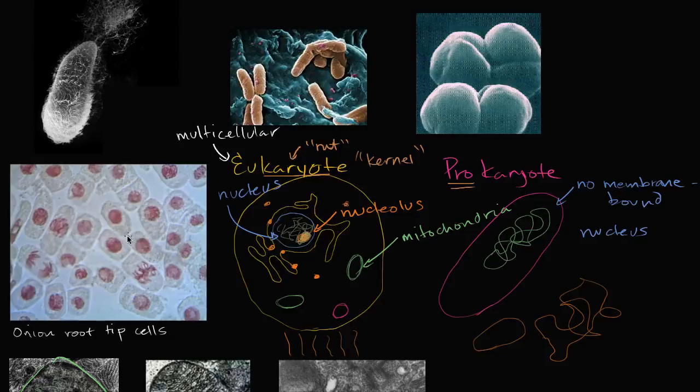This right over here, these are onion root tip cells. So these are plant cells, and you can actually see it's been stained. You can actually see the membrane-bound nucleus here. And this is actually a cool picture, because you can see these cells at different stages of mitosis, which is interesting. Animal cells, the things that make you, you. You are eukaryotic.